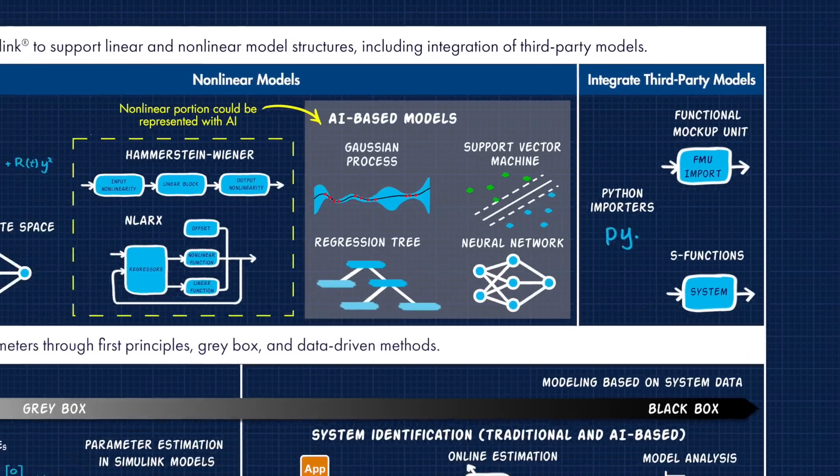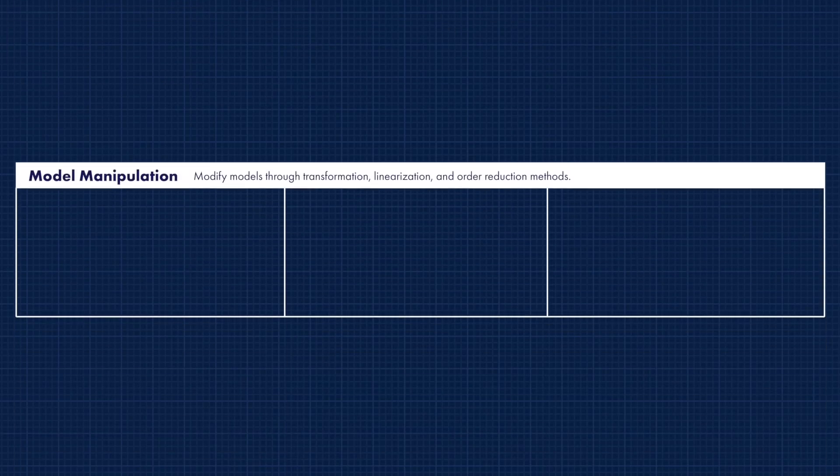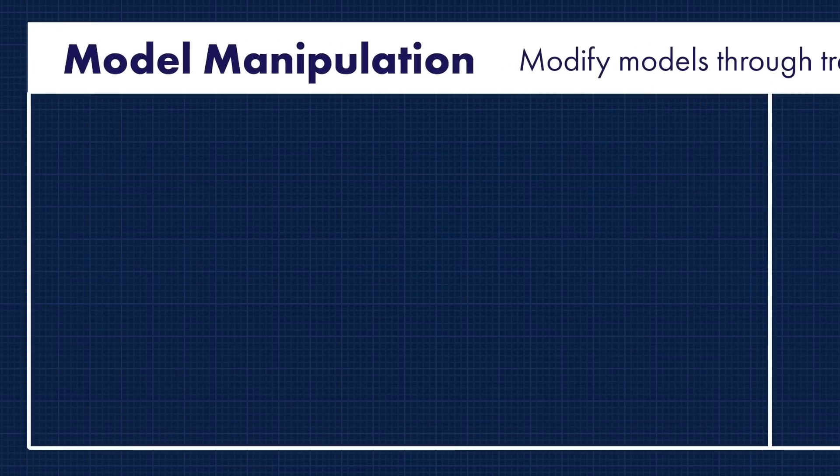Now we've created a model, we've picked a structure, and we've defined the model parameters through first principles, gray box, or data-driven methods. But you'll often find that a model might not be in the right format for what you want to use it for. You may need to manipulate it, or change it in some way so that it becomes useful for a different purpose.